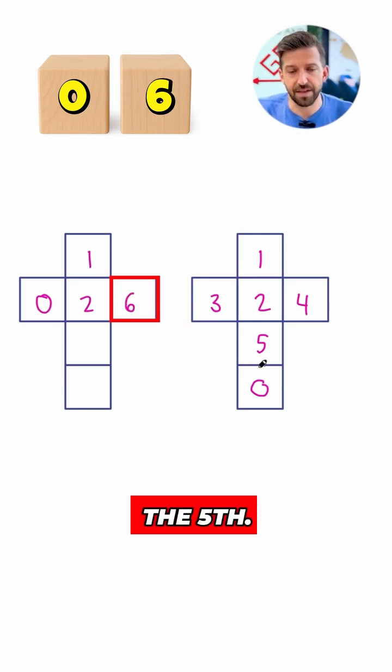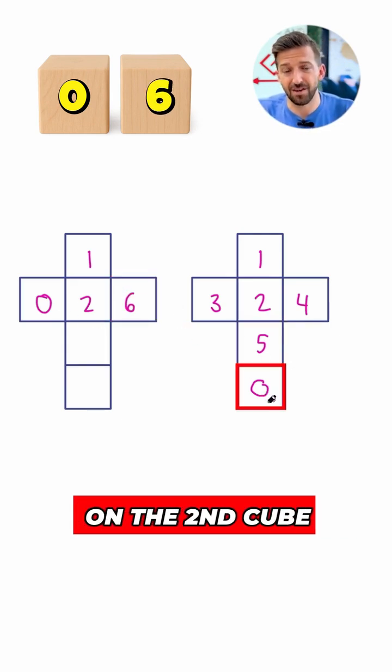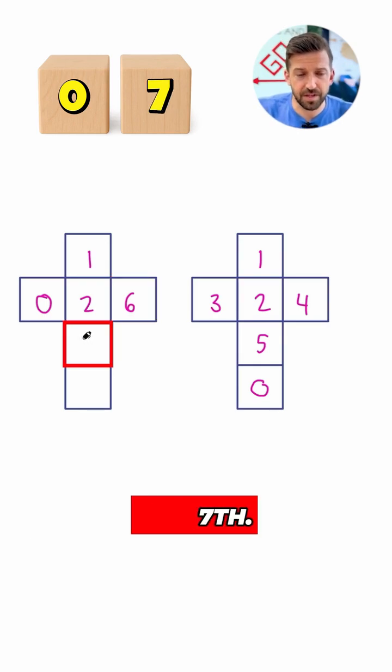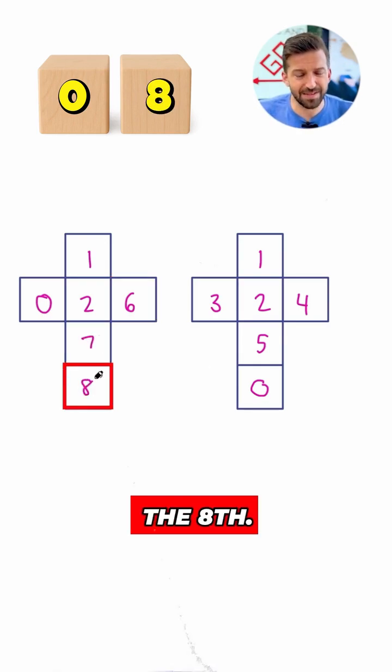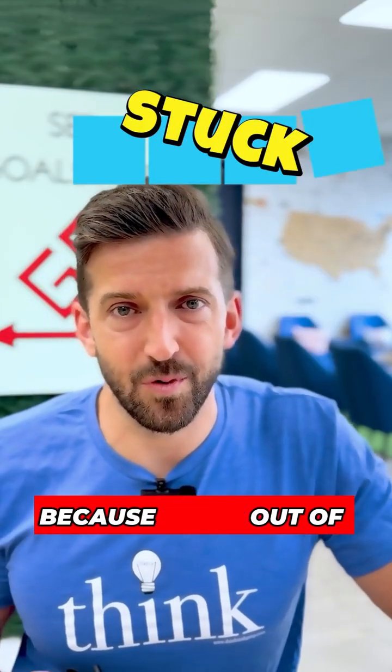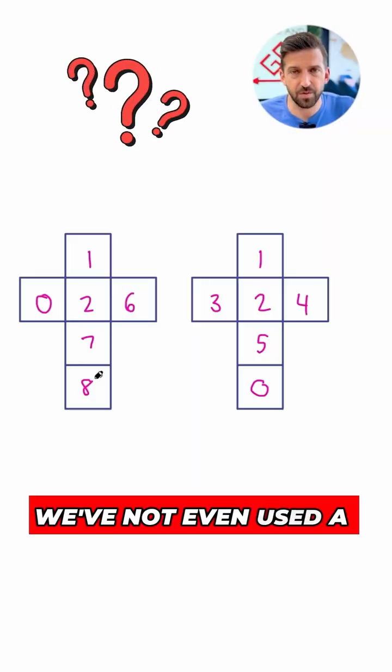So one more time, I had the fifth. Now I've got the sixth, kind of using the zero on the second cube and going back to the first. Now I've got room for the seventh. Now I've got room for the eighth. Now we're kind of stuck, aren't we? Because we're out of spaces. We've not even used a nine yet.